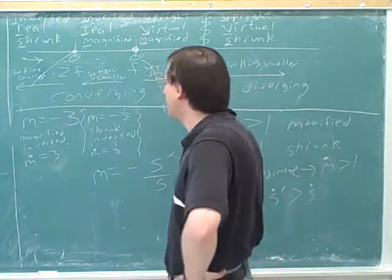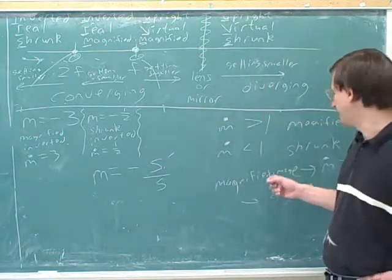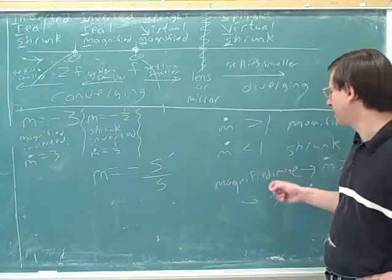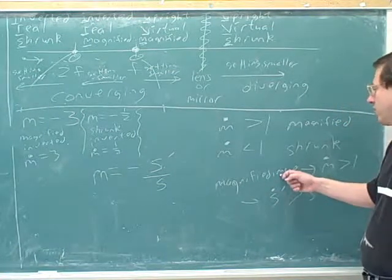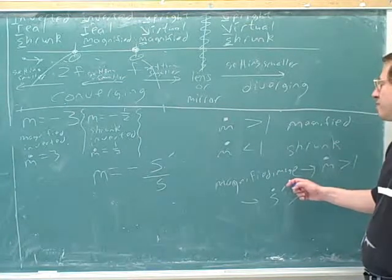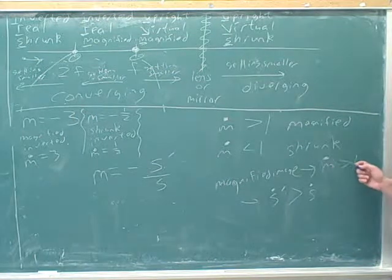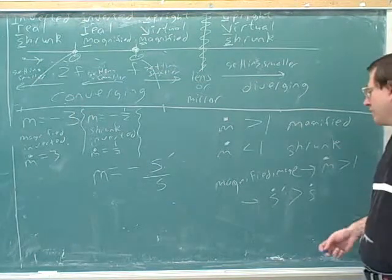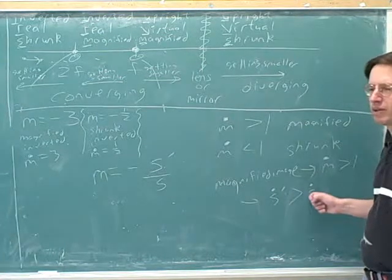So again, right now, we're just focusing on magnification. So we're not really talking about whether these are shrunken or inverted. But it could be either inverted or upright. Any magnified image, whether upright or inverted, has to have an absolute value for the magnitude that's bigger than 1. So magnitude or absolute value of the image distance has to be greater than the object distance.